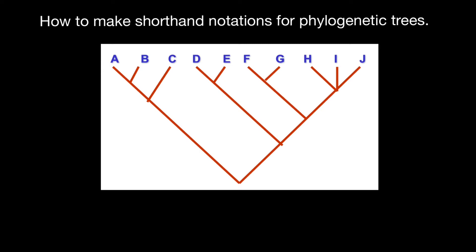We start with two parts. Here's one main branch and here's another main branch. Let me highlight them in different colors — this is going to be one branch in green color and in blue color here's going to be another branch. Let's highlight all the relationships here.